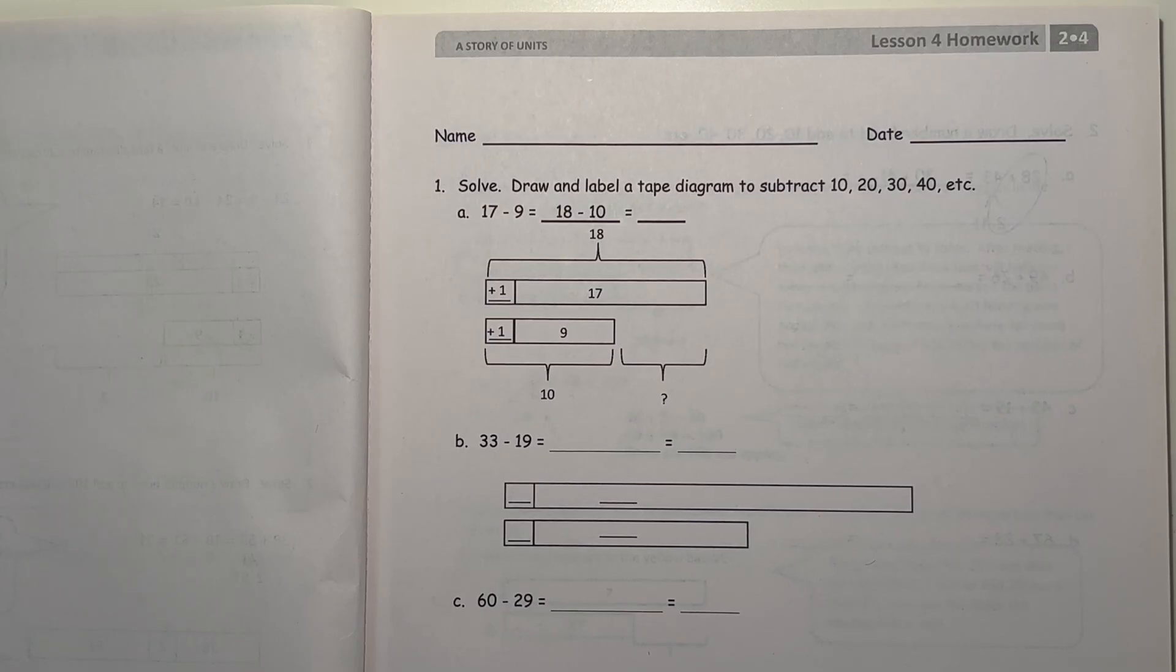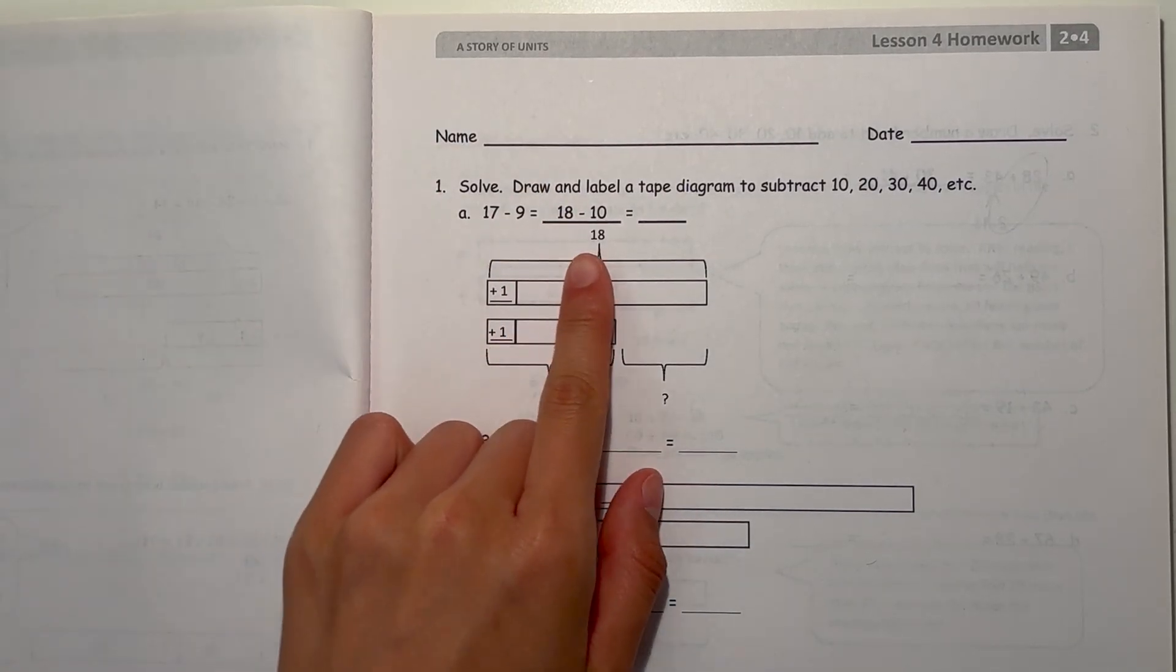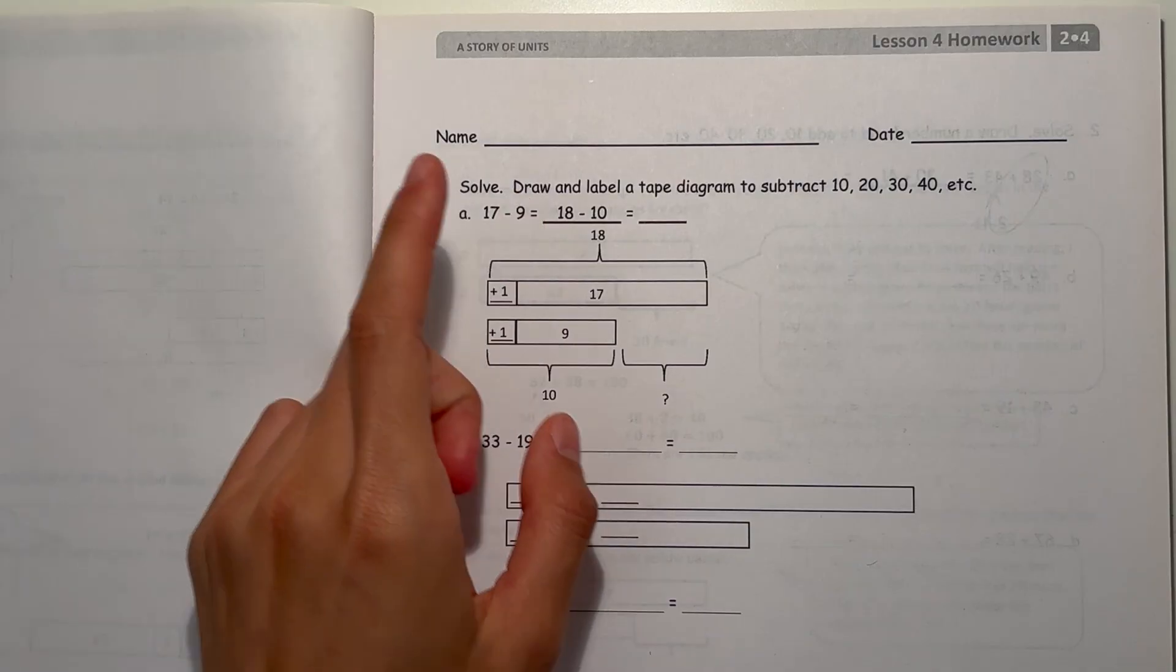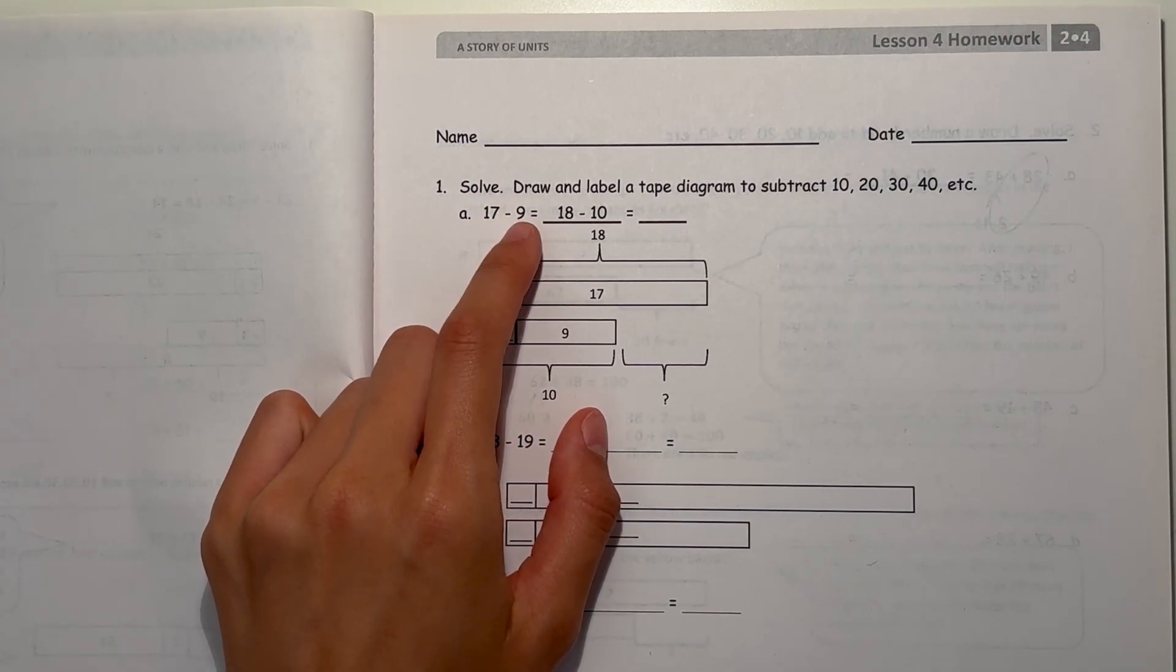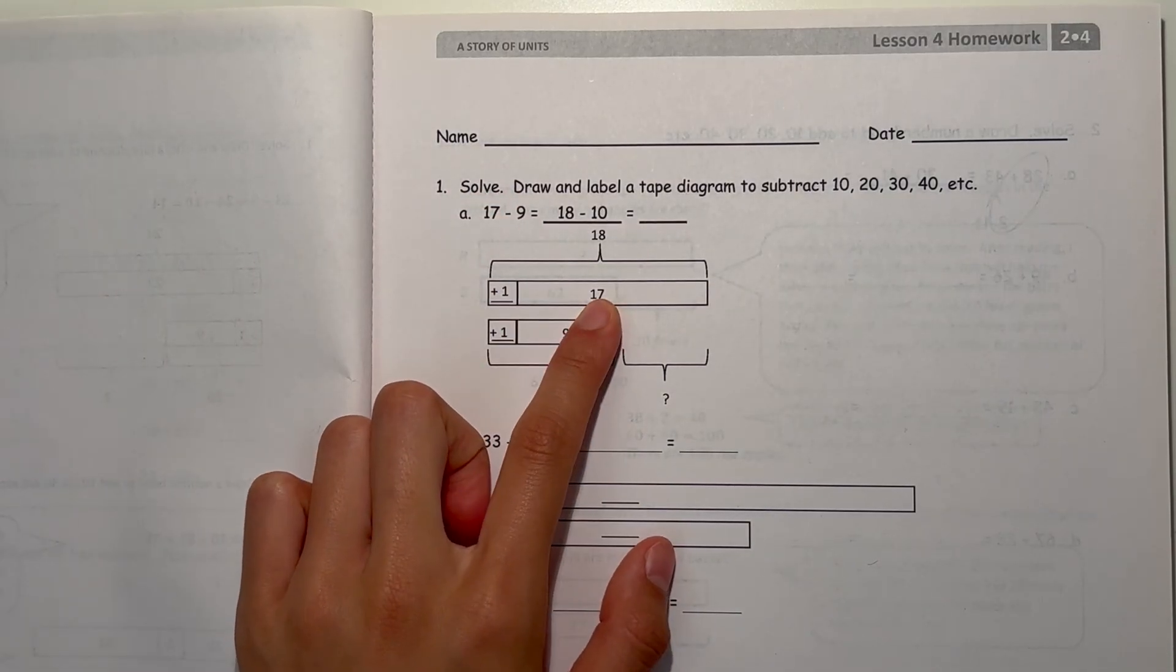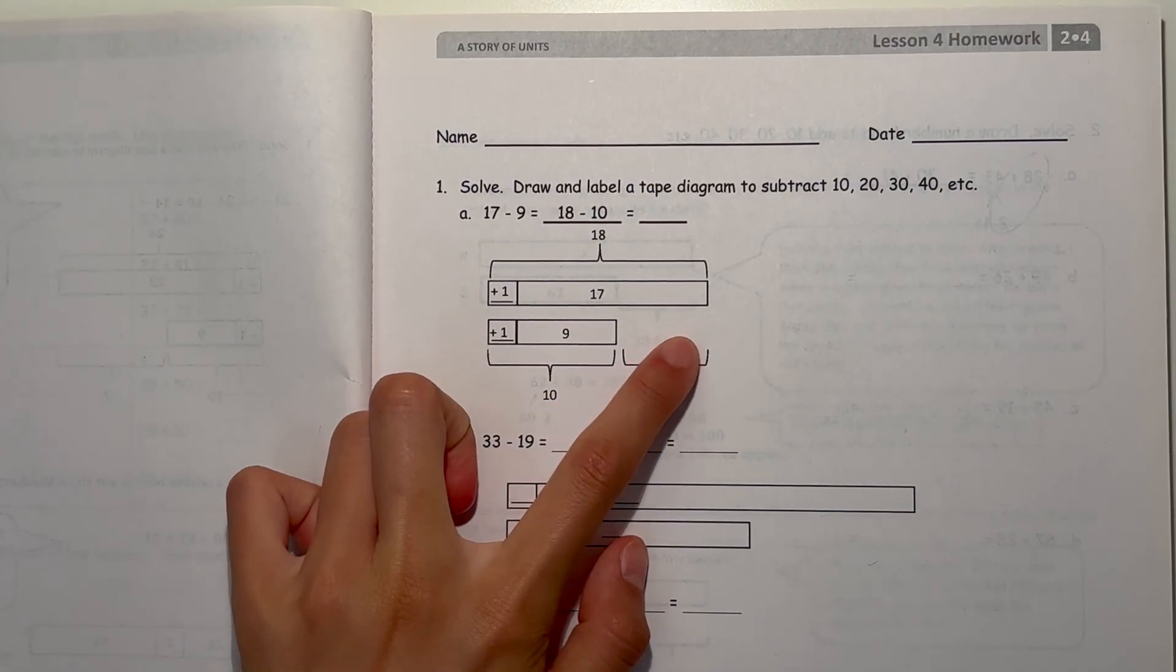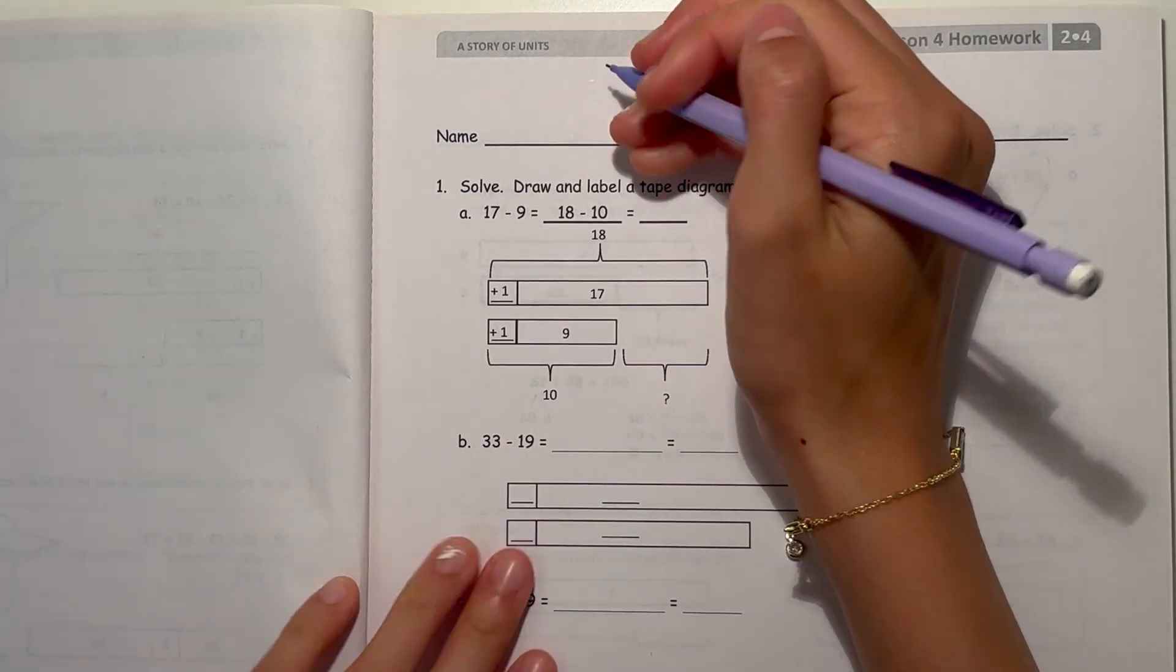So what they did here, 17 minus 9, they added 1 to both sides so they got 18 minus 10. And it's still going to be equal since they added 1 to both the numbers. So here's 17 and 9, and they add 1, so you find the difference, which would be 8.